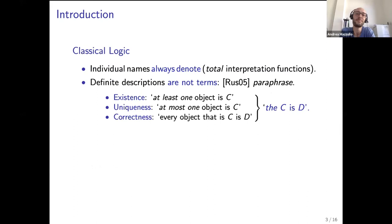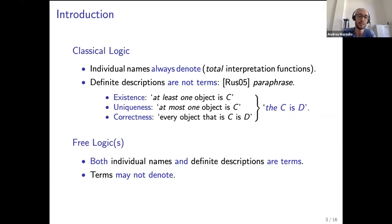In classical logic, non-denoting referring expressions are not so easily captured since individual names are always denoting given that interpretation functions are total, and definite descriptions are typically not even included as terms of the language. Following a standard approach that dates back to Russell, sentences like the c is d, where the c is a definite description, are paraphrased with a conjunction that says at least one object is c, at most one object is c, and every object that is c is also d.